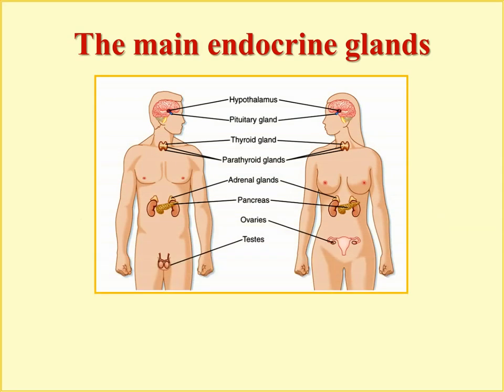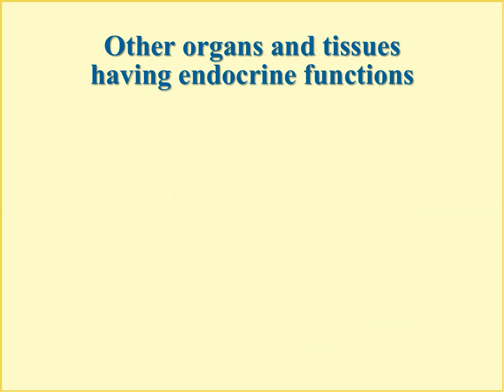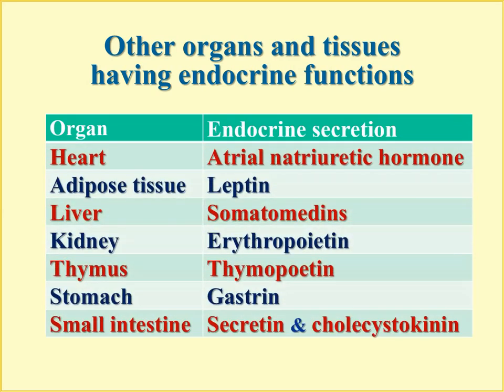At this picture you can see the main endocrine glands of the body. Hormones released by these glands into blood are transported by blood flow to their target cells, then bind the receptors of these cells and perform effects which can include regulation of homeostasis, growth and development processes, reproduction, and utilization of energy. In addition to these main endocrine organs, there are numerous other organs and tissues that possess endocrine functions. Some examples of these hormones are given in this table, and most of them we are going to consider in corresponding sections of normal physiology.